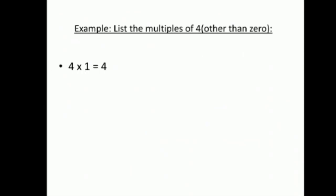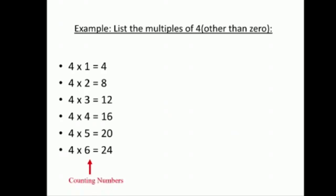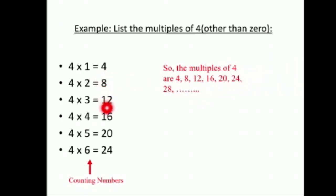Four times one equal four, four times two equal eight, four times three equal twelve, four times four equal sixteen, four times five equal twenty, four times six equal twenty-four. هلأ هون أنا عم بعمل counting numbers، والملتبلز همي: four, eight, twelve, sixteen, twenty, twenty-four — هي الـ product بالـ table of multiplication.